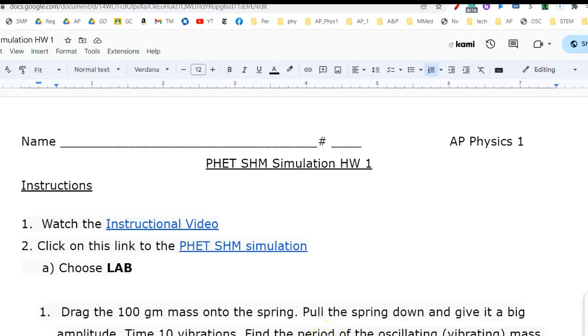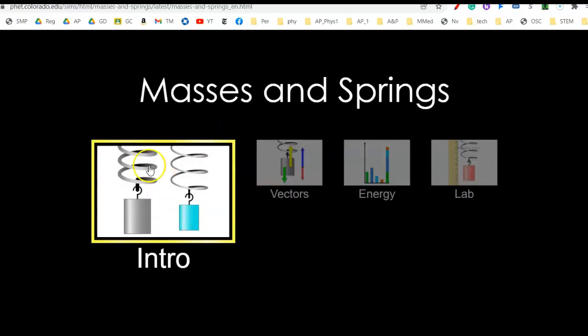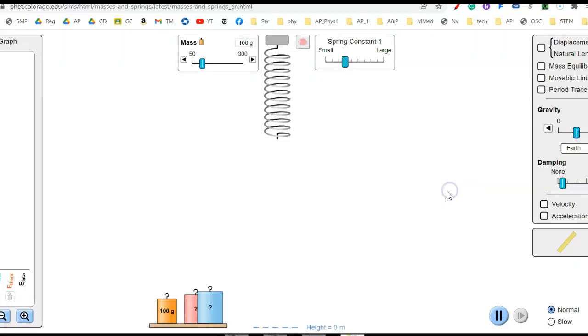I want to start class by explaining tonight's assignment. You'll do this sheet in front of you with a simulation link. You might not need the video - I'll show you how to do it. Click on the simulation link, it's really super easy. Pay attention everybody, look up. Do not click on this intro. Click on the lab, and then you're told to put the 100-gram mass on that.